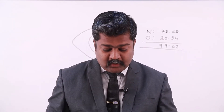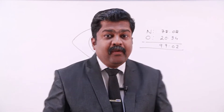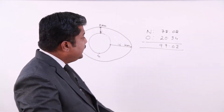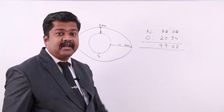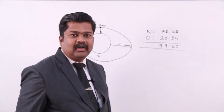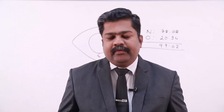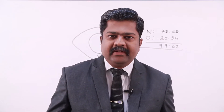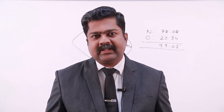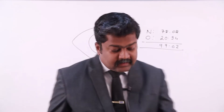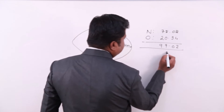The third largest component by volume is less than 1%. You might guess carbon dioxide or carbon monoxide, but the answer is no. The third largest component by volume is argon gas, which is an inert gas at 0.93%.